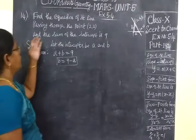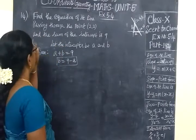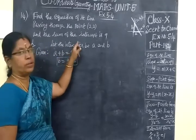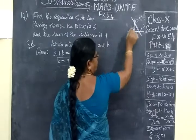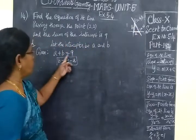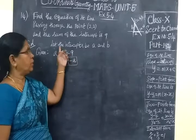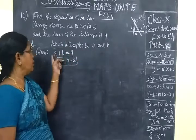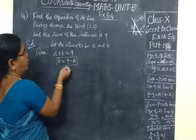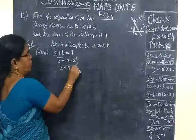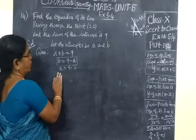Find the equation of the line passing through the point (2,2) and the sum of the intercepts is 9. So let the intercepts be A and B. Sum of the intercepts is 9, so B equal to 9 minus A, or A equal to 9 minus B. Any one we can take, so we can take B equal to 9 minus A.